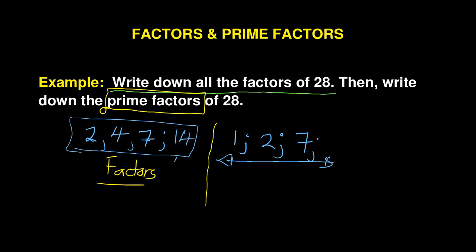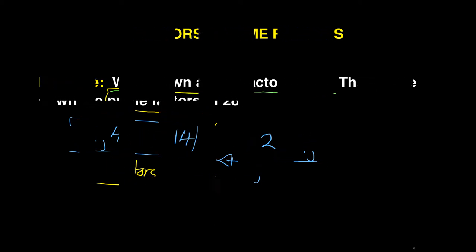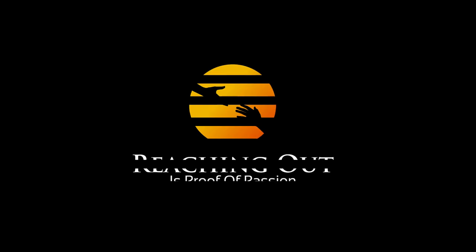So these become the prime numbers, meaning from these factors I get the prime factors. That is how you could have approached it. I hope this was of benefit to you. Thank you.